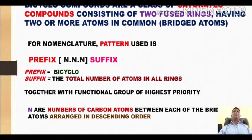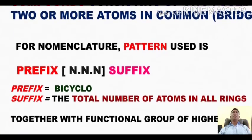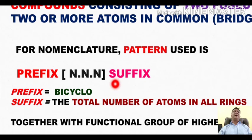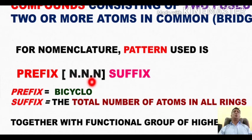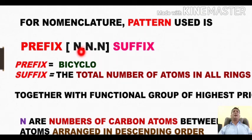For nomenclature of such rings, we use a pattern that combines a prefix and a suffix, both separated by a square bracket containing three numbers. These numbers are arranged in decreasing order — the highest value is placed first, then the intermediate value in the second position, and the least value at the third place.